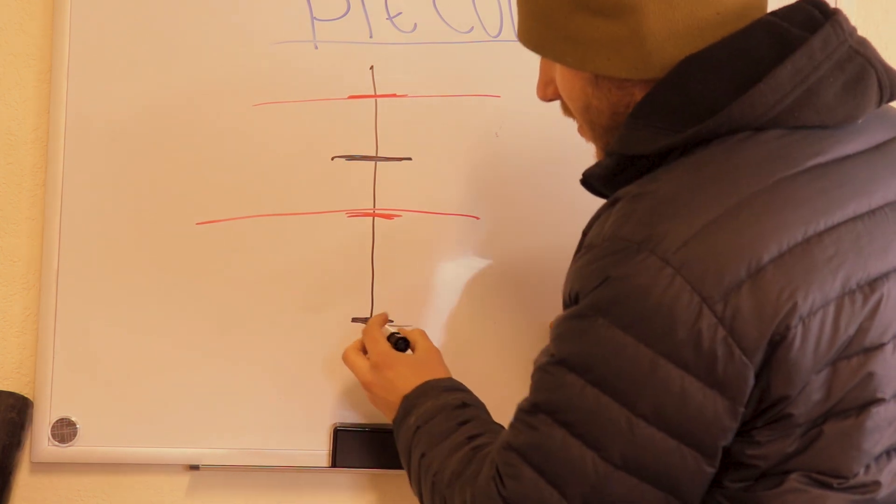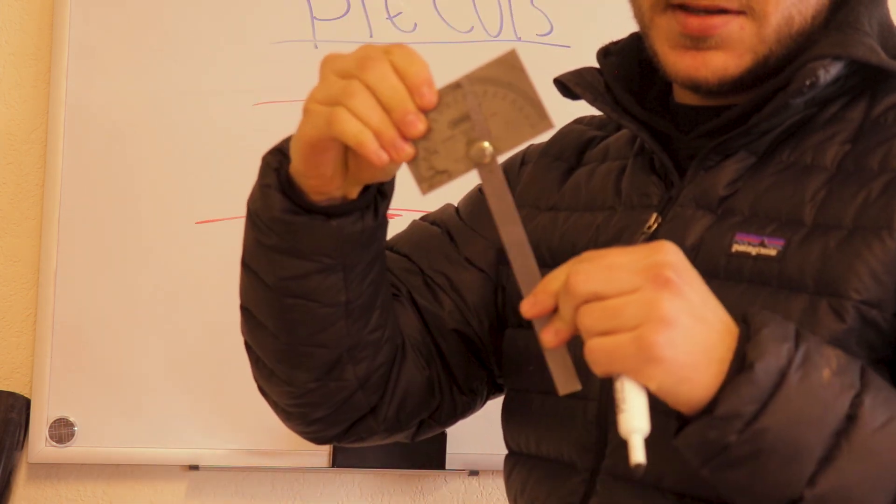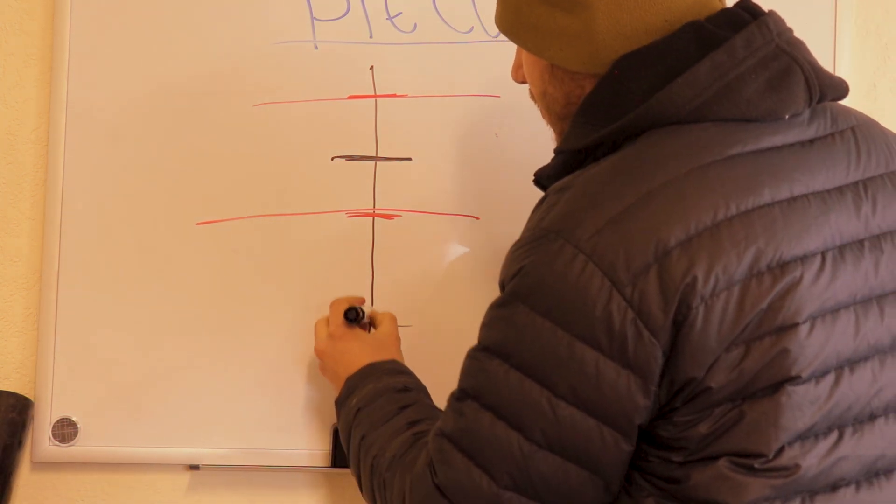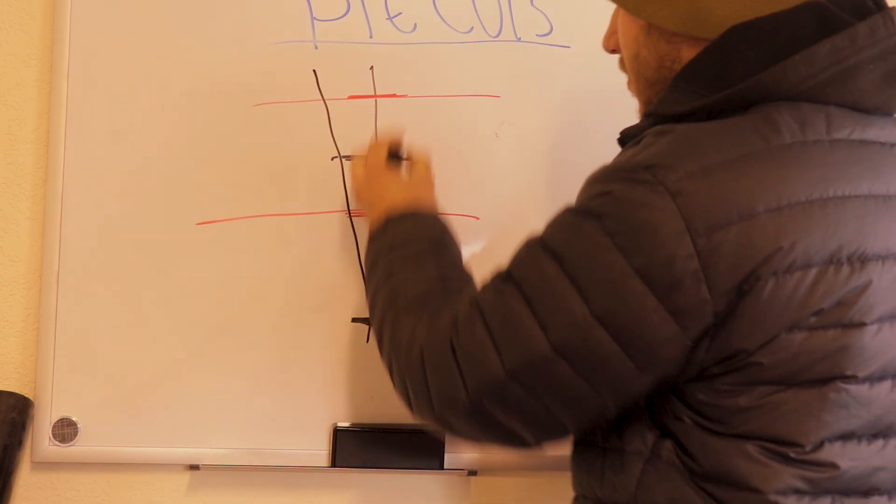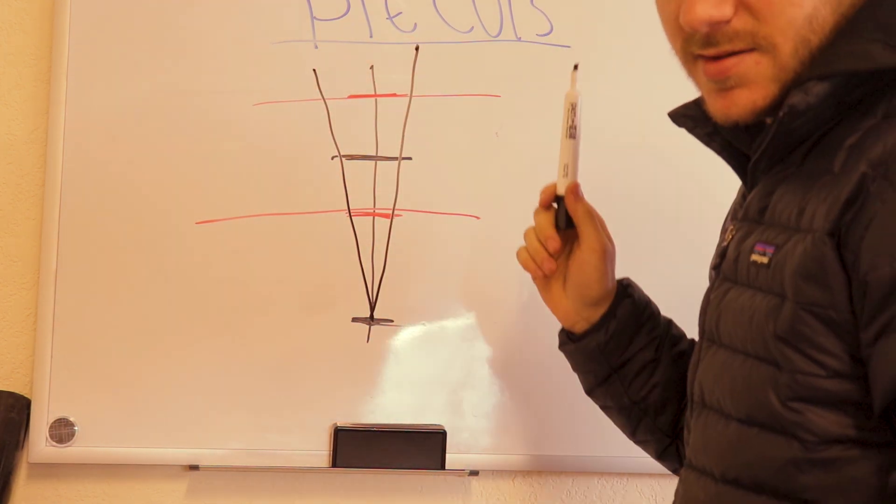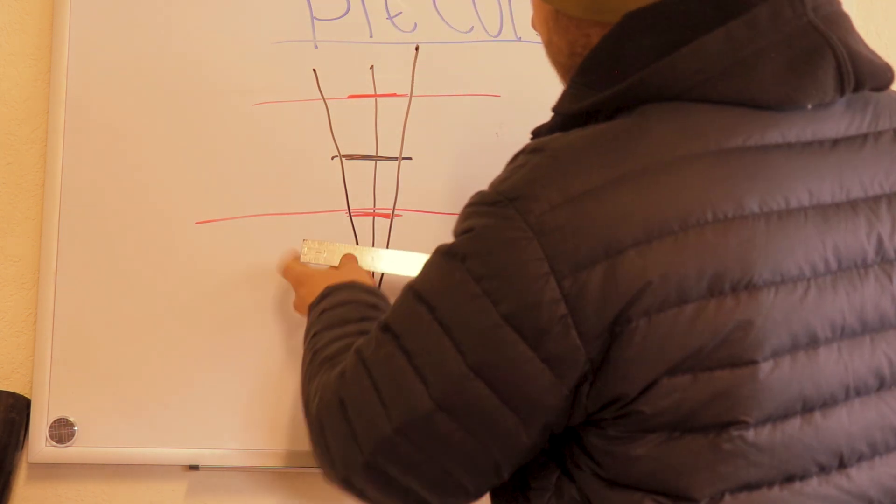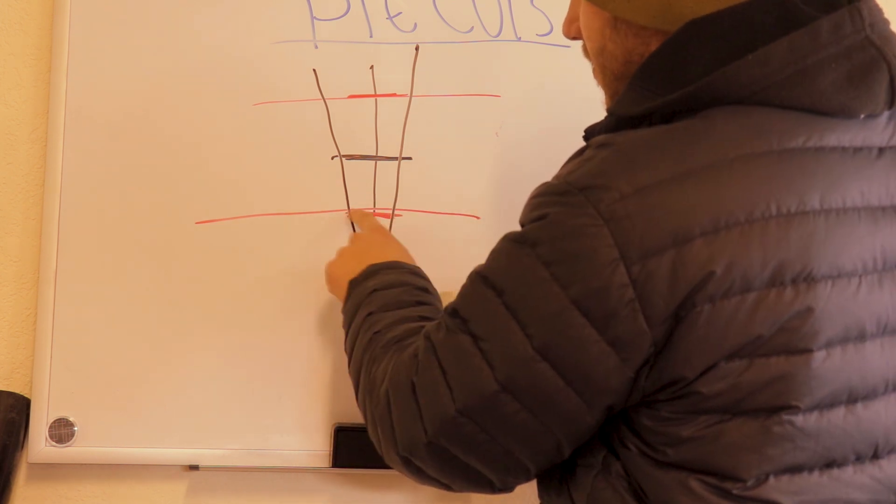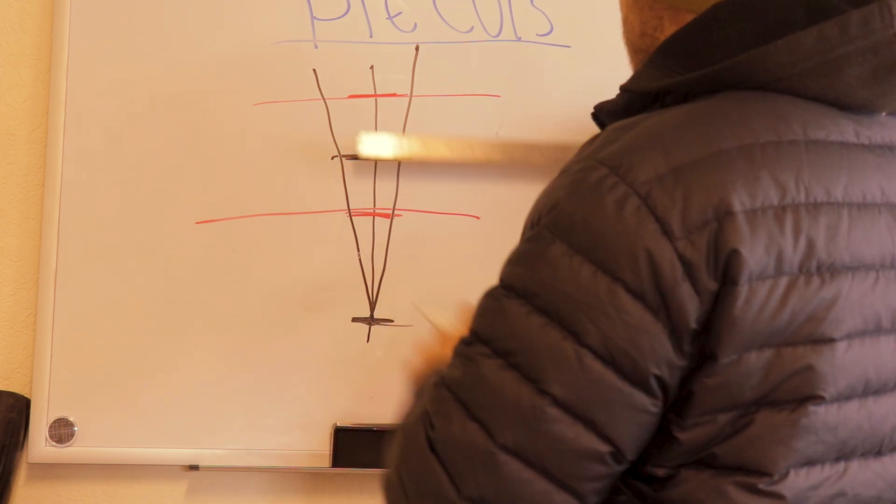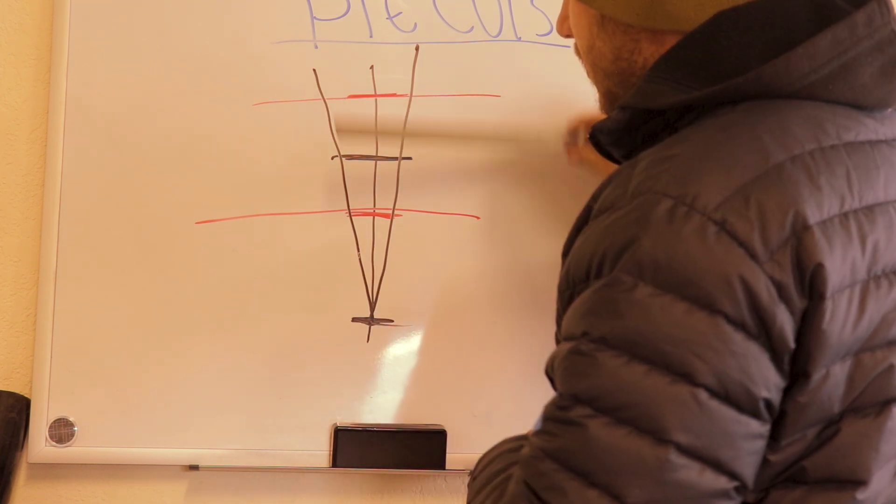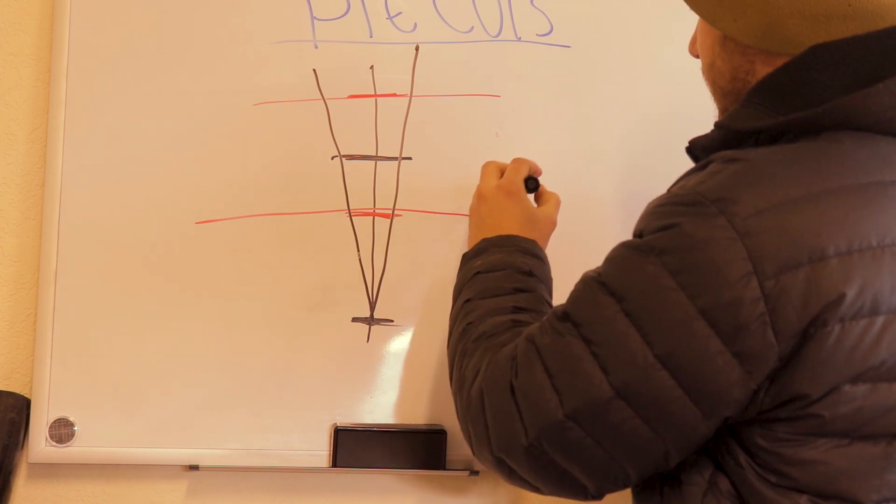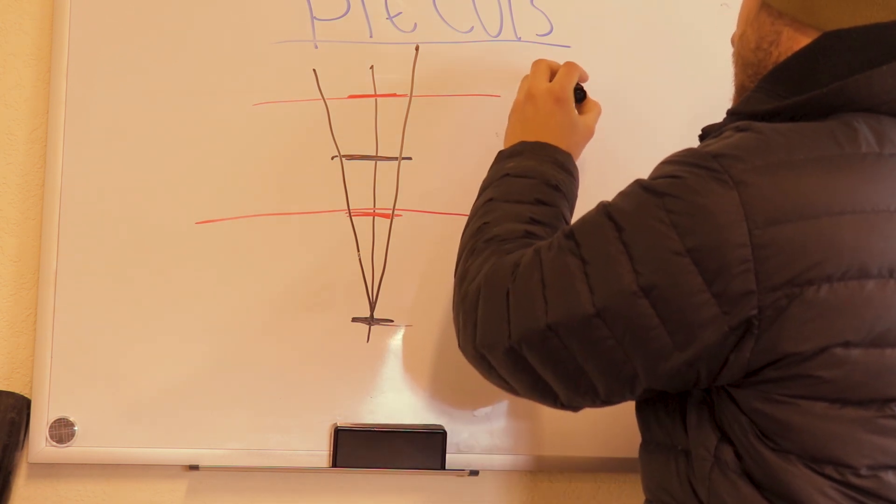So all you do is take a measuring device of some kind. Let's say you got one of these. Set it at seven and a half degrees. Put it right here. And mark straight up. On both sides. And then, you're just going to take something that you're measuring it with. Figure out how wide it's going to be at the narrow point and at the tall point.